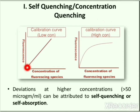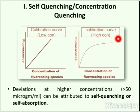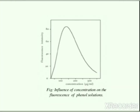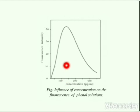In this picture you can see calibration curves for low concentration and high concentration solutions. For low concentration solution, fluorescence intensity increases with increasing concentration of the fluorescent substance, while for high concentration solutions it decreases. This effect is known as self quenching or self absorption. This spectrum denotes the influence of concentration on the fluorescence of a phenol solution, where fluorescence intensity increases up to 150 microgram per ml and then decreases.